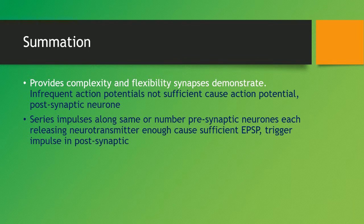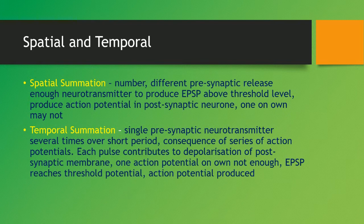Summation provides complexity and flexibility of synapses to demonstrate that infrequent action potentials alone are not sufficient to cause an action potential in the post-synaptic neuron. A series of impulses along the same or a number of pre-synaptic neurons, each releasing neurotransmitter, is enough to cause a sufficient EPSP to trigger an impulse in the post-synaptic membrane. In spatial summation, there are a number of different pre-synaptic neurons that together release enough neurotransmitter to produce an EPSP above the threshold level — one alone is not enough.